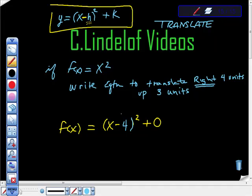So that gets us 4 units to the right. I know it looks opposite, doesn't it? But what number makes x minus 4 equal 0? Positive 4. That's why that works.